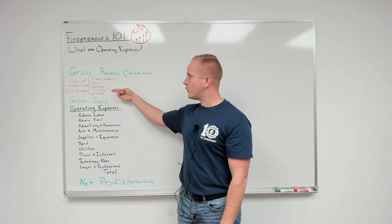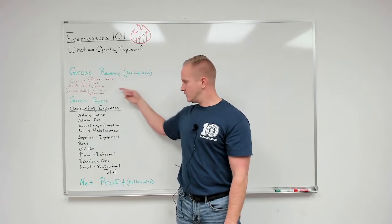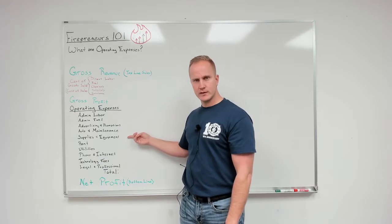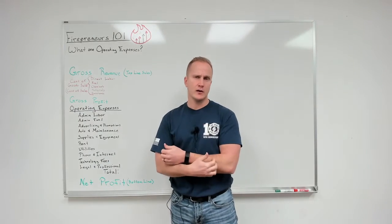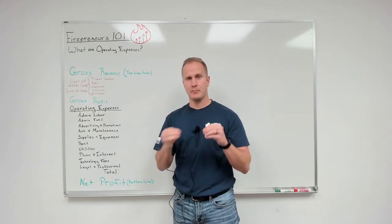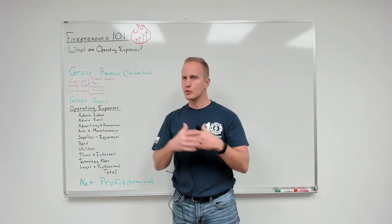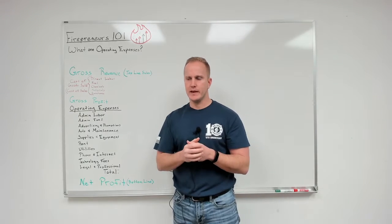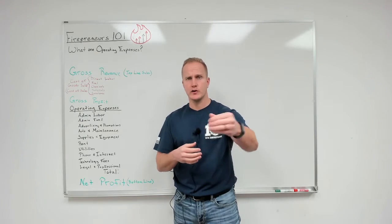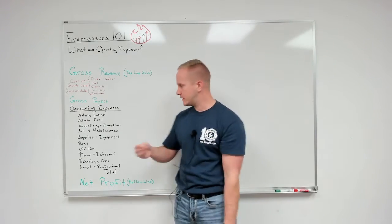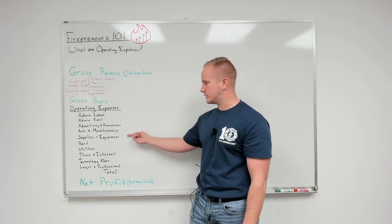Those things are required to do the service. A lot of things that we have in the junk removal industry, or for maybe if you're in exterior cleaning or carpet cleaning, a lot of the things that we end up buying are nice to have. They improve the level of service, they make the service more efficient for your team members, but they're still a nice to have, and that's why I put them in your operating expenses, which would be supplies and equipment.